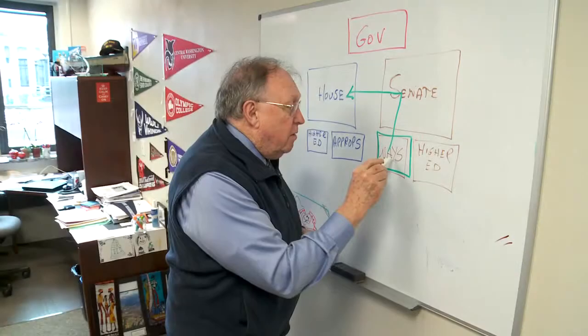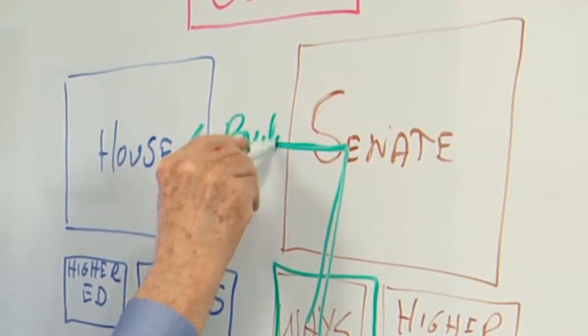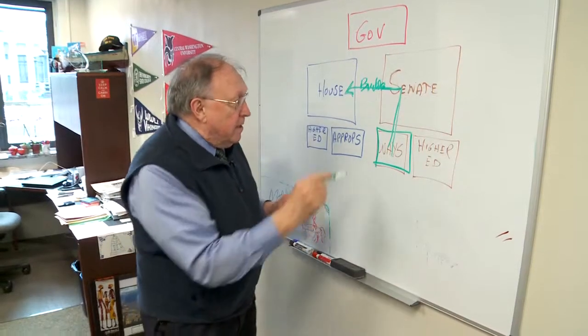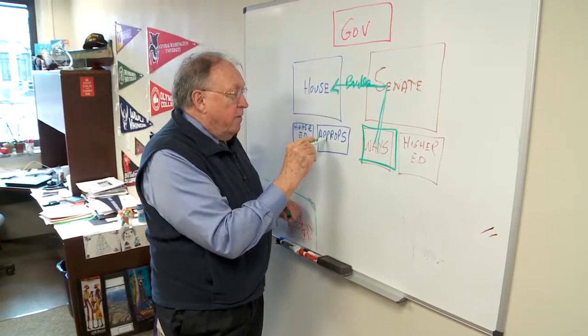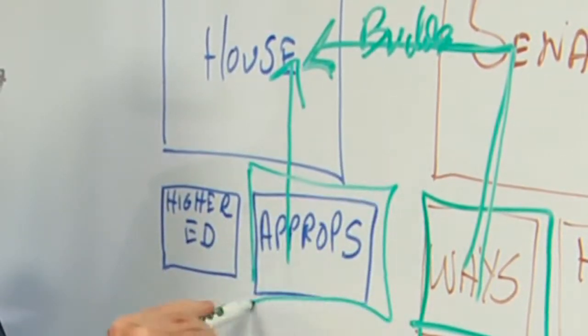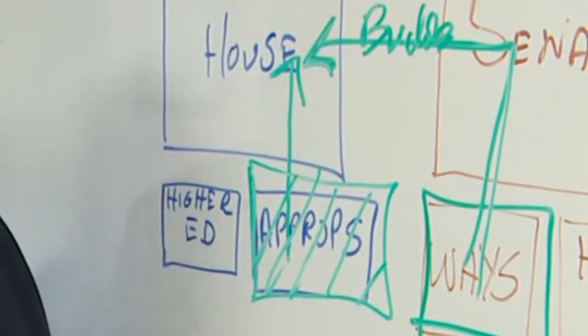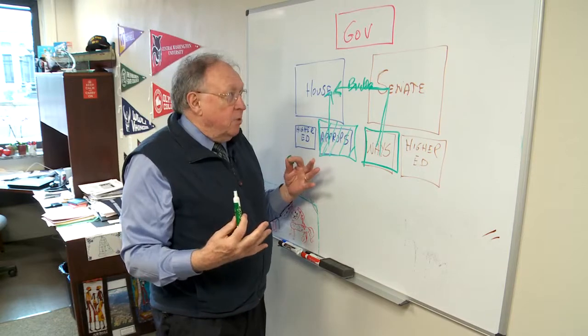So the Senate will send the House a budget proposal, and at the same time over here in the House we've started building our version. We're still down here in our Appropriations Committee where I work, still building our version of what that budget would look like.